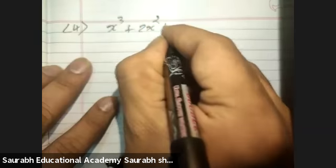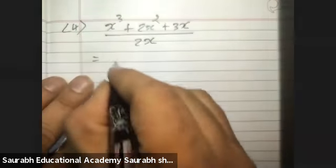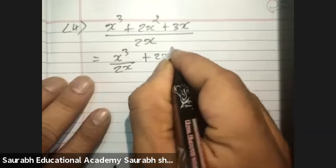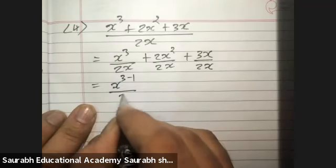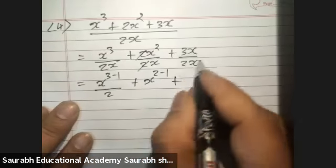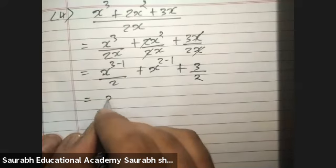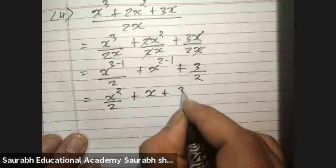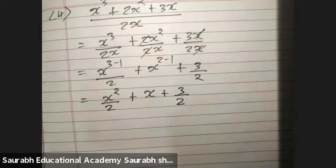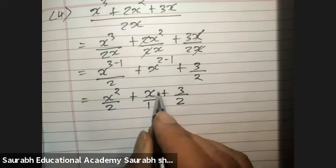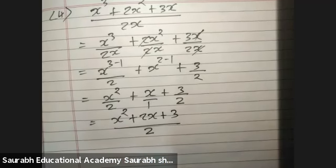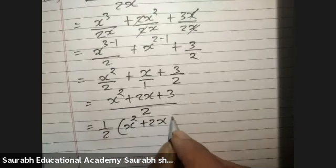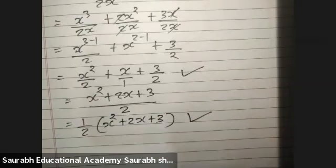Fourth one: x cube plus 2x squared plus 3x divided by 2x. Splitting: x cube upon 2x plus 2x squared upon 2x plus 3x upon 2x. Using exponent rule: x raised to 3 minus 1 upon 2, x raised to 2 minus 1, and 3 upon 2. This gives x squared upon 2 plus x plus 3 by 2. Taking LCM: 1 by 2 times bracket x squared plus 2x plus 3. Both forms are correct.